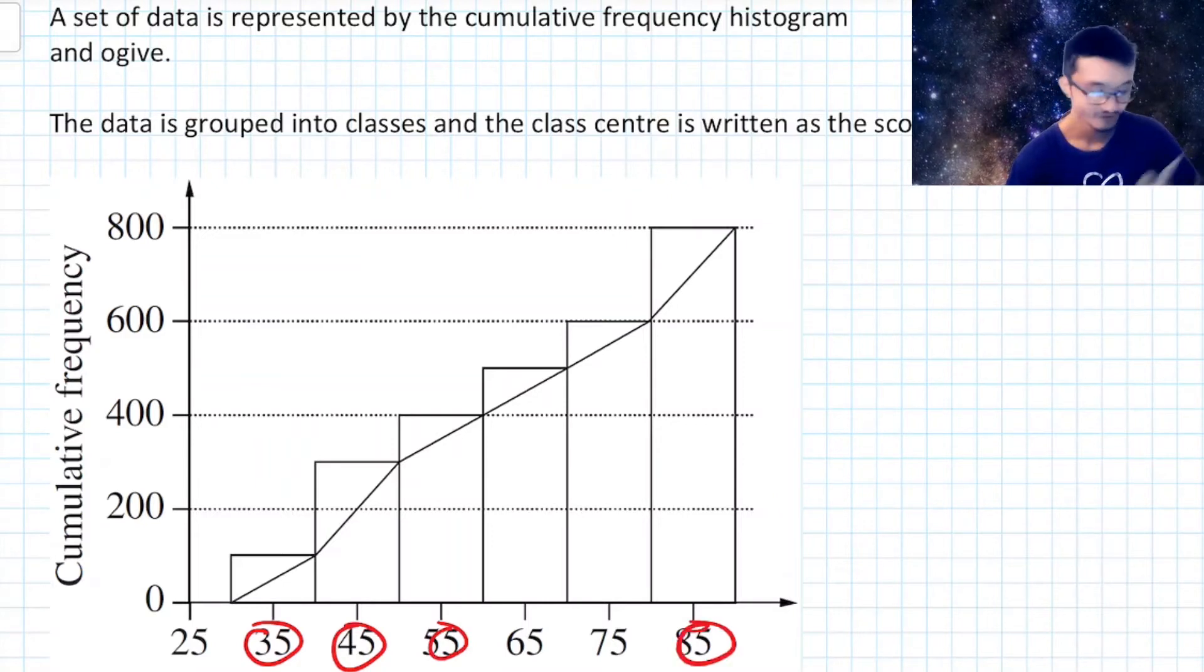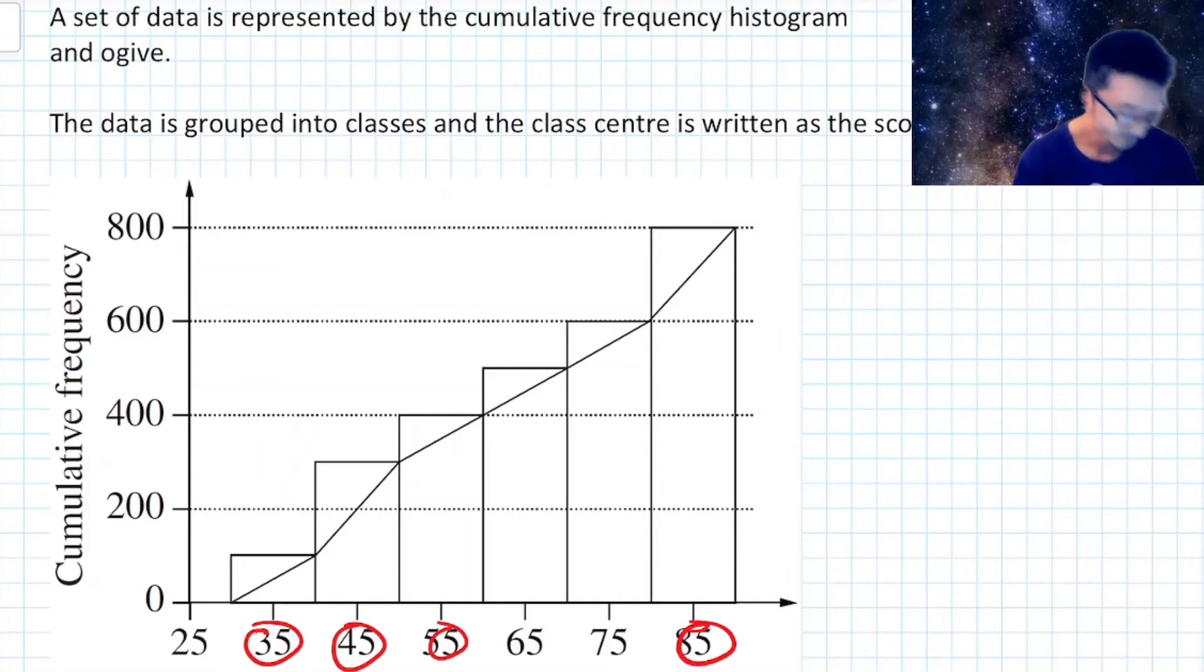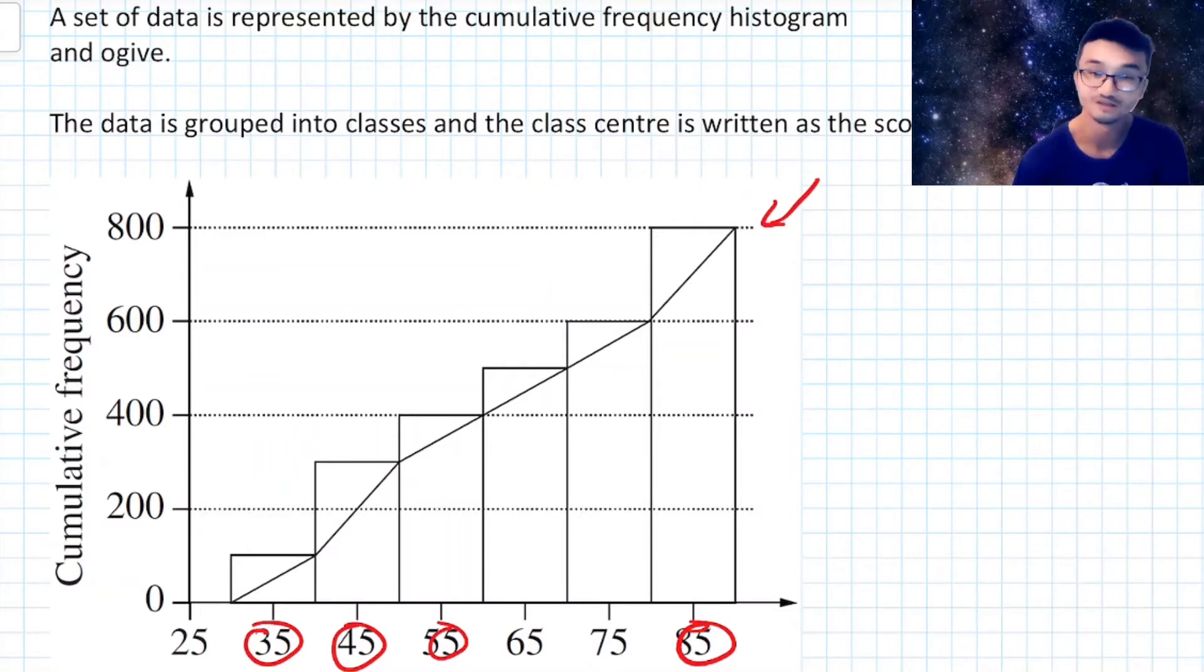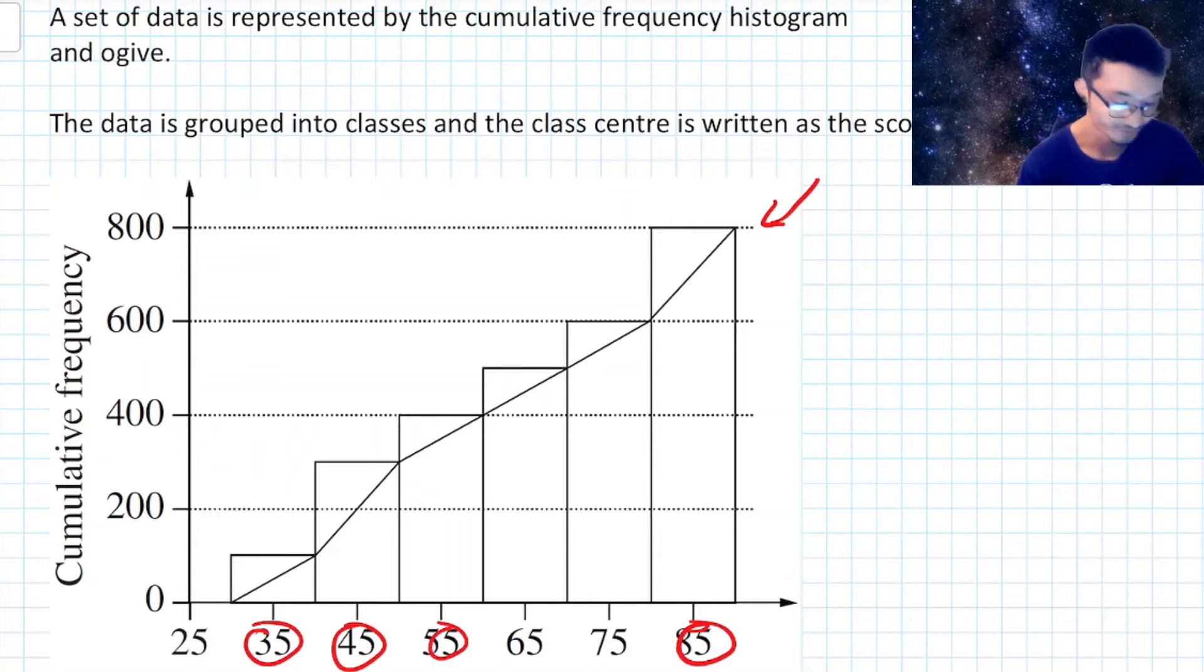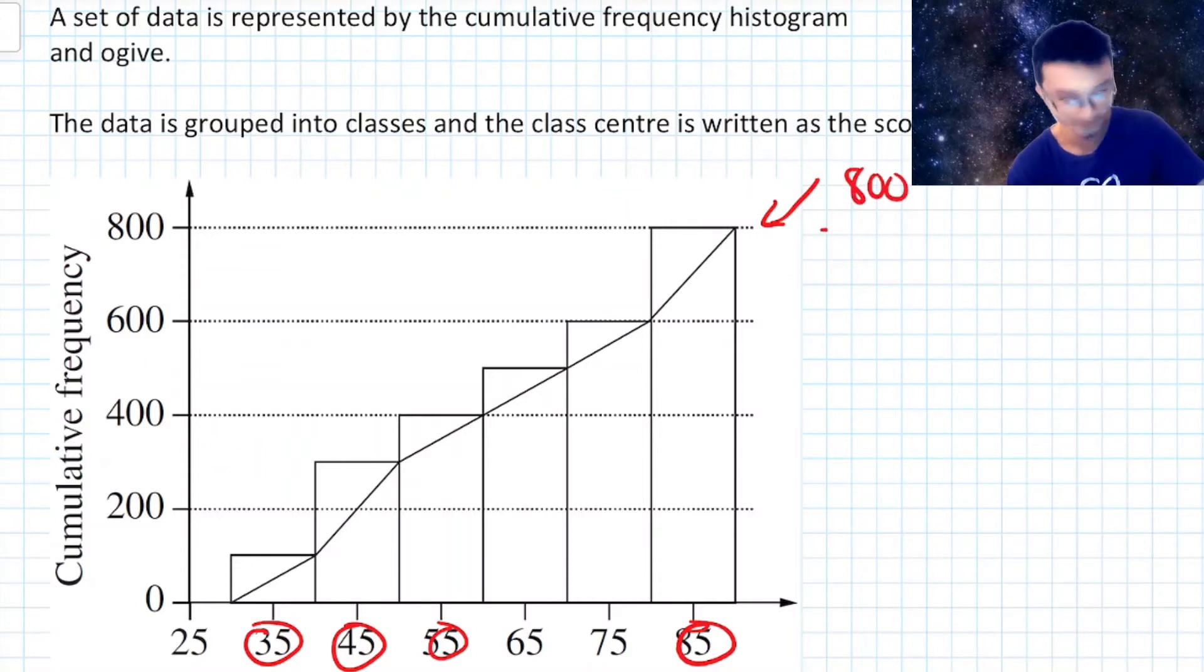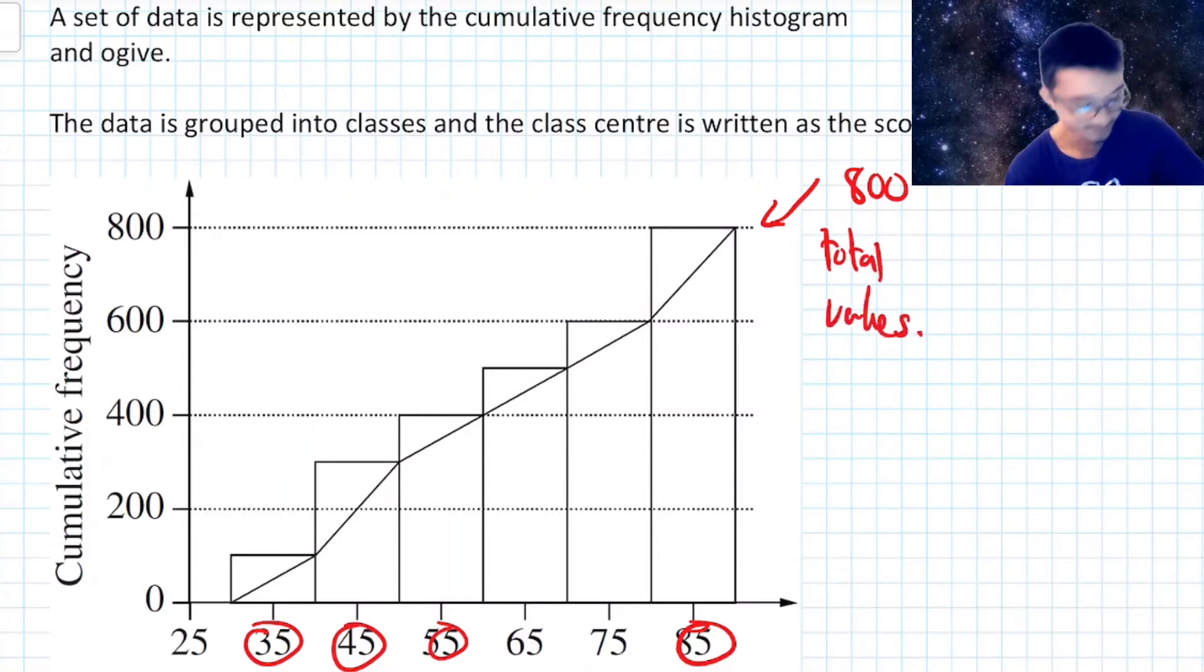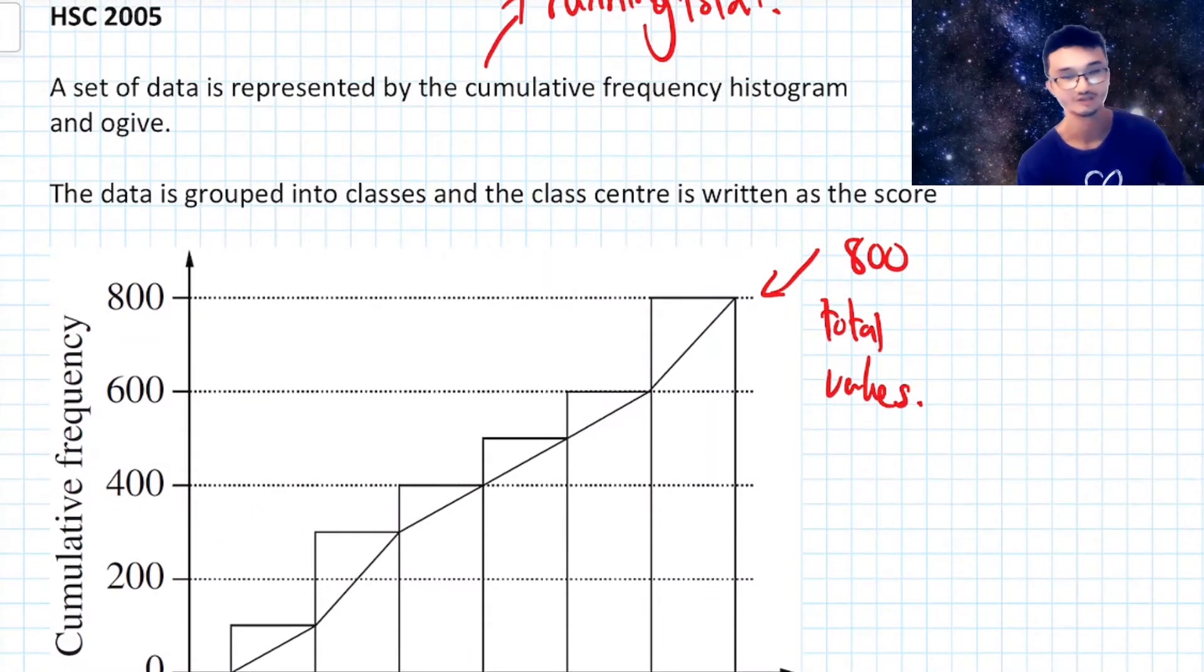So by the time it gets to 85, this class center, that's actually going to be looking at how many are in the data sets, how many total scores in the data set. And we can see we go all the way up to 800, so we know that there's 800 total values. That's something to think about. Another thing to consider is that the data is grouped into classes and the class center is written as the score.